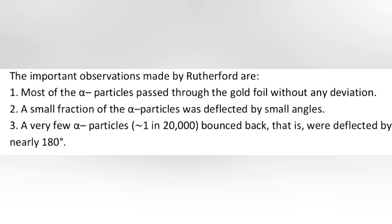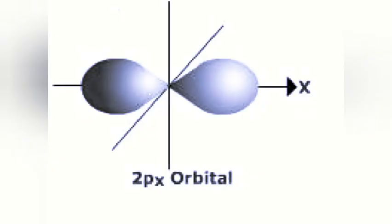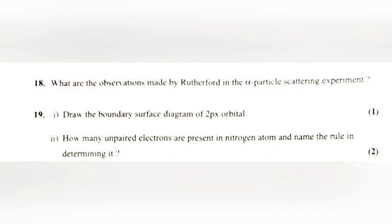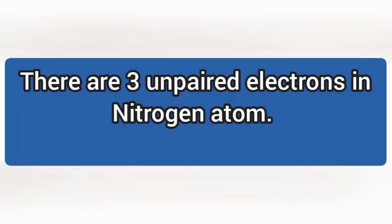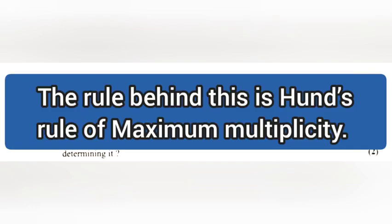Question 19.1: Draw the boundary surface diagram of 2px orbital. Question 19.2: How many unpaired electrons are present in nitrogen atom and name the rule in determining it? Answer: There are three unpaired electrons in nitrogen atom and the rule behind this is Hund's rule of maximum multiplicity.